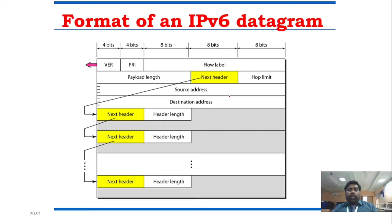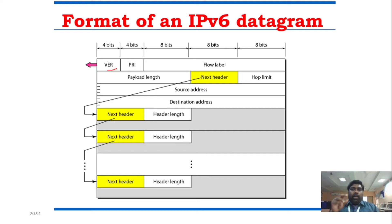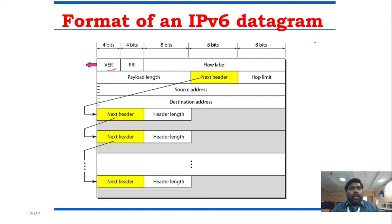Looking at the IPv6 header format: it has a version field, similar to IPv4. The version field indicates which protocol version is being used — in this case it is IPv6. It tells you what data and what protocol IPv6 is using, and what format is present.